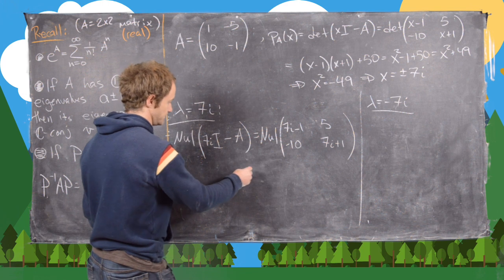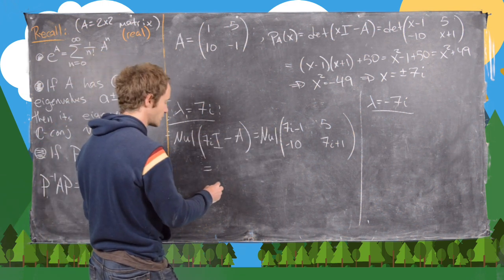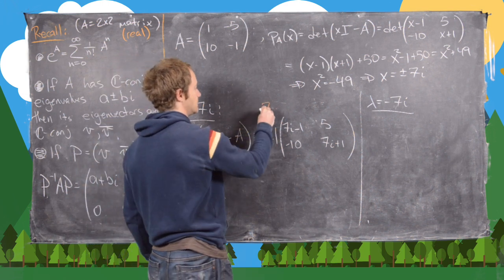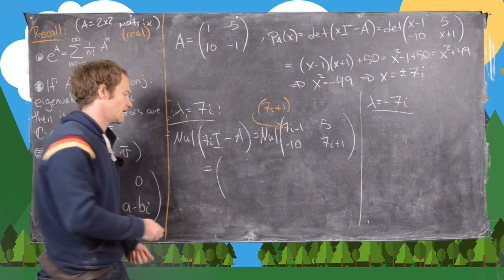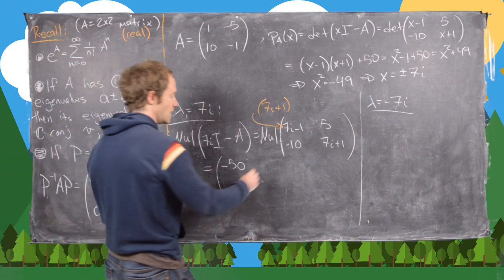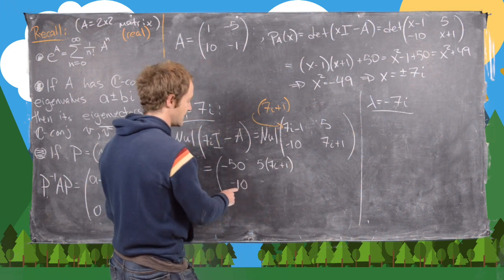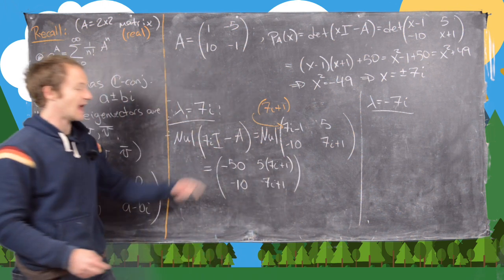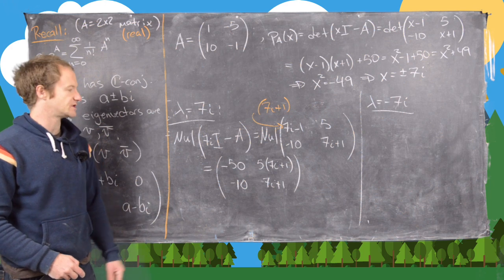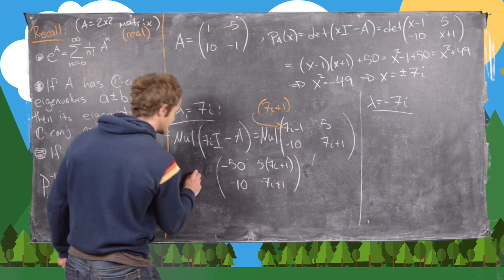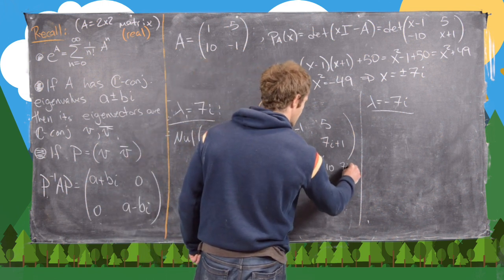We multiply the first row by (7i plus 1): that gives negative 49 minus 1, which is negative 50 in the first position, and 5 times (7i plus 1) in the second. The second row stays as negative 10 and (7i plus 1), then zeros. It's clear these two rows are multiples of each other, so the null space reduces to the single row: negative 10, (7i plus 1), with zeros.